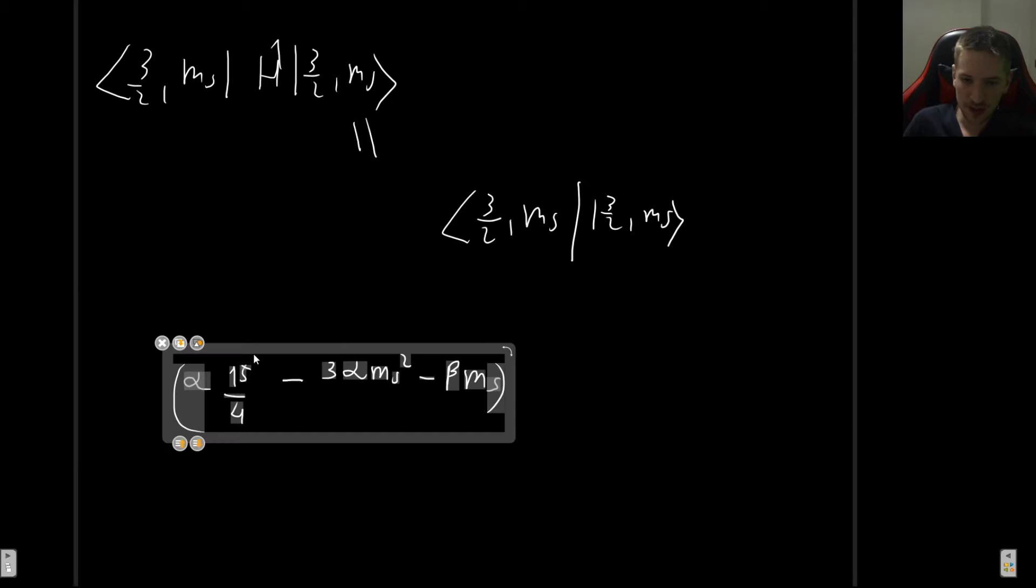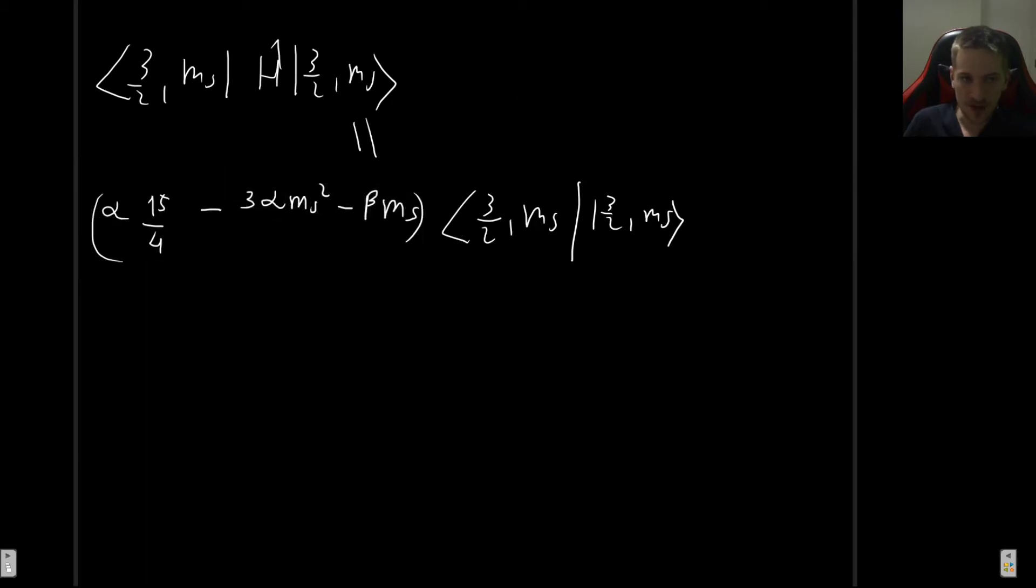And now what we have, we have simply the inner product of states that are normalized. So that's simply going to be one. So this right here is going to be our energy levels. This is going to be our energy. And we can see that this value will change depending on what the exact value of m_s is. If you want, you can go ahead and just plug the numbers in just to see what you get. And that's actually the result.